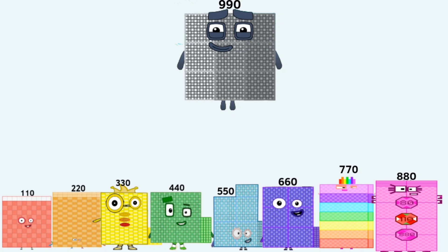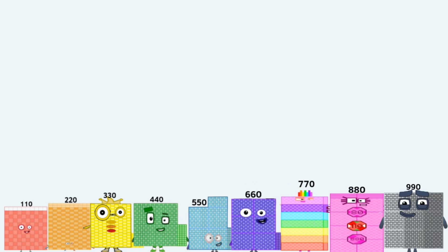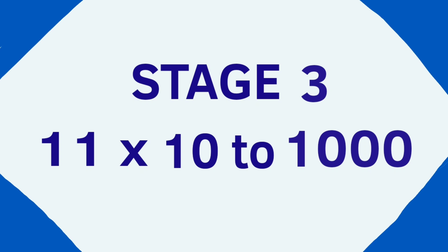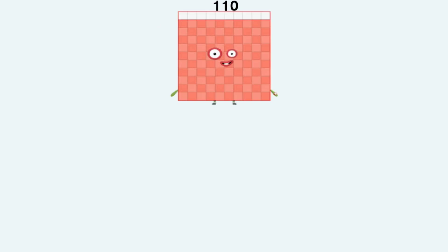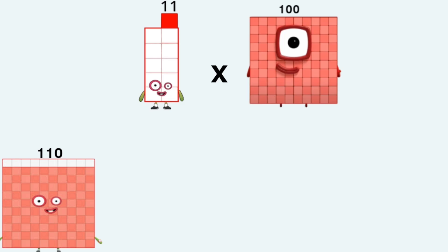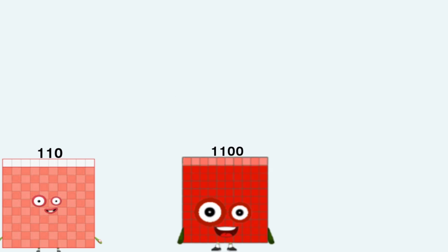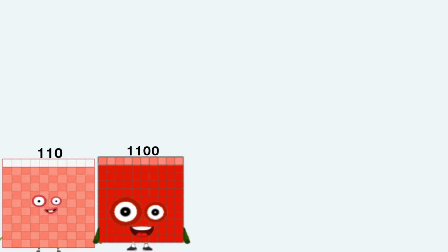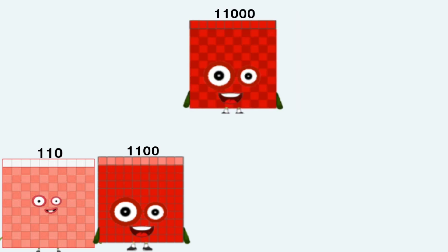Stage 3: 11 times 10 to 1 million. 11 times 10 equals 110. 11 times 100 equals 1,100. 11 times 1,000 equals 11,000.